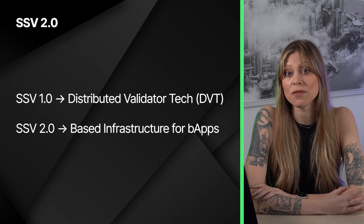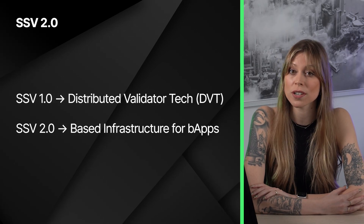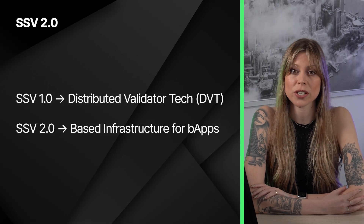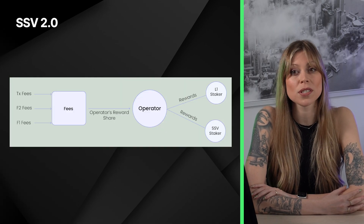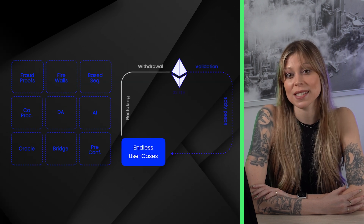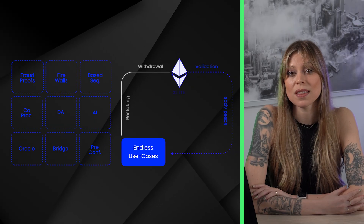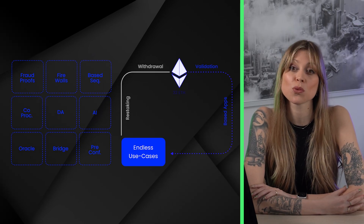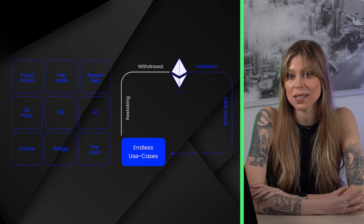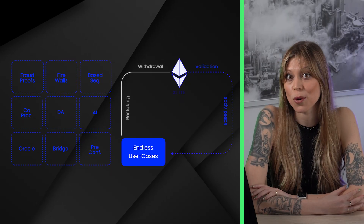SSV 2.0 evolves the SSV Network from just providing distributed validator technology, or DVT, infrastructure, to being based infrastructure, enabling validators to both secure applications and unlock new yield streams. The first based application is the based applications chain. Think of this as a central hub, coordinating validators with multiple L1s to support a new wave of decentralized apps, protocols, AI, oracles, L2s, and more.